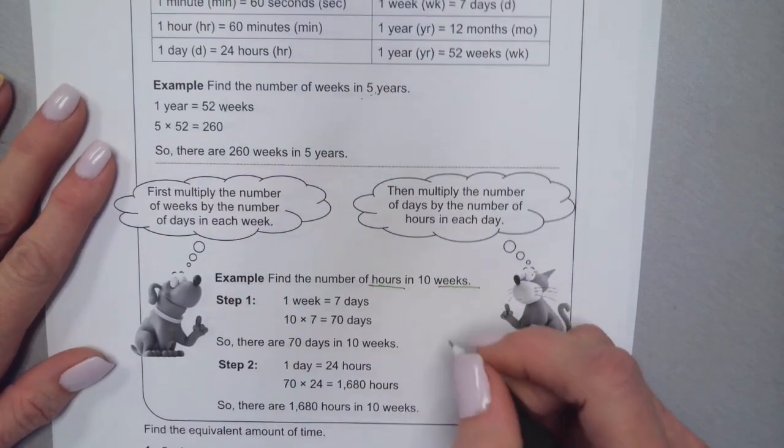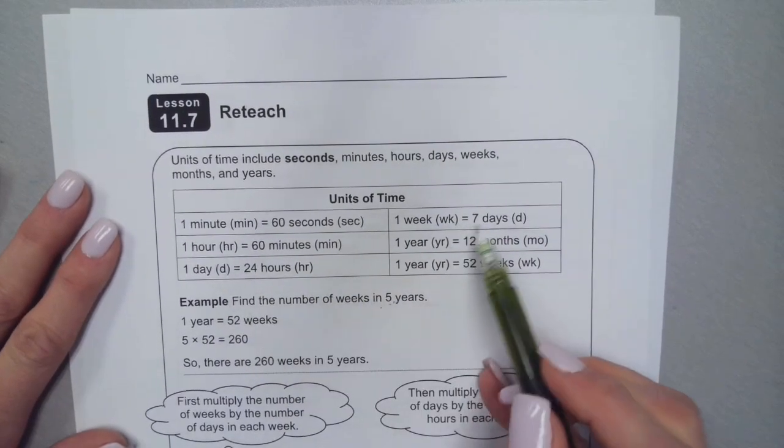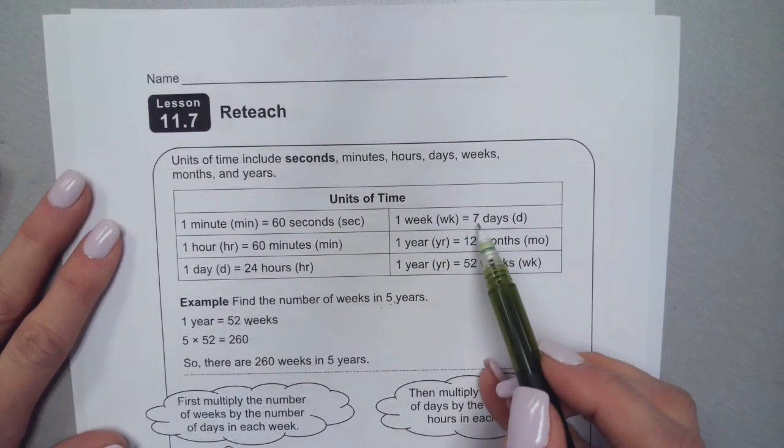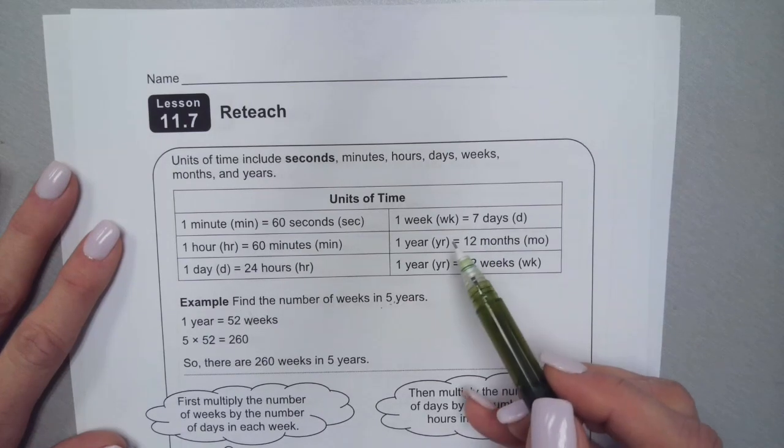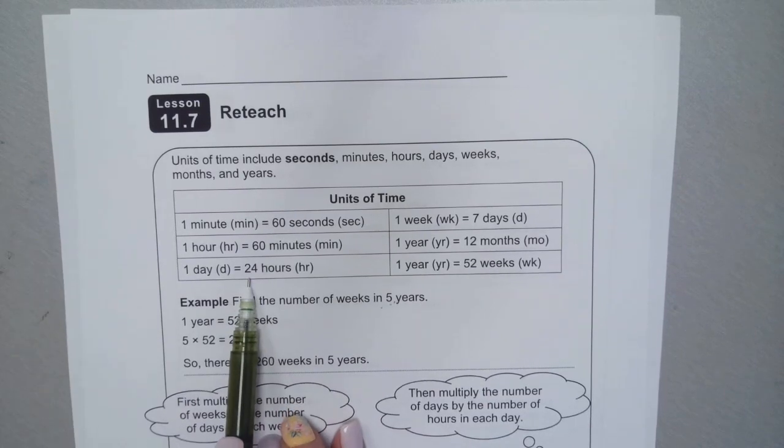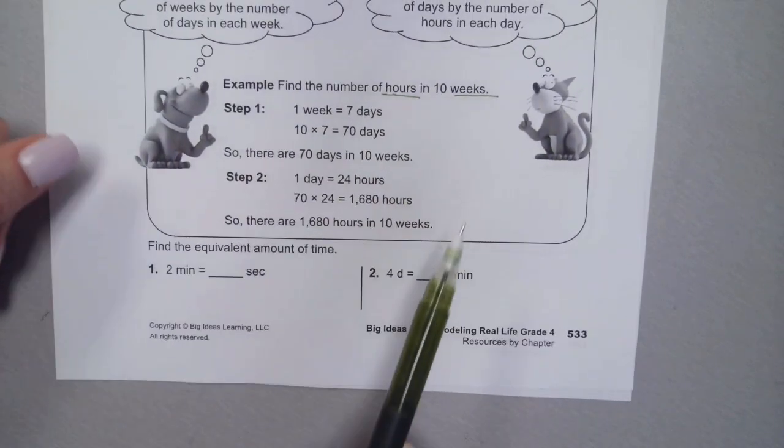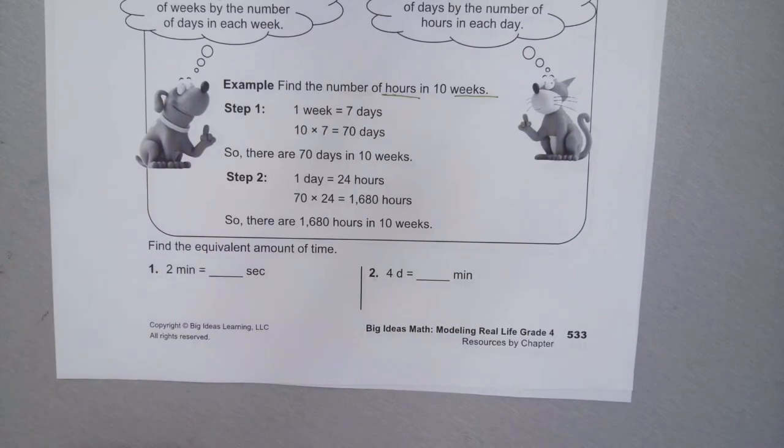It was asking us about hours to weeks, so first I had to figure out how many days there were in 10 weeks, which would be 70 days, and then in each of those days there are 24 hours. That's why we did 24 times 70. Well, not exactly, but mathematically we're going to go with it.